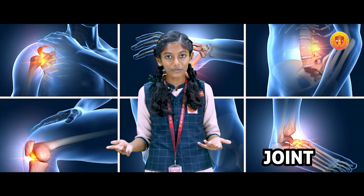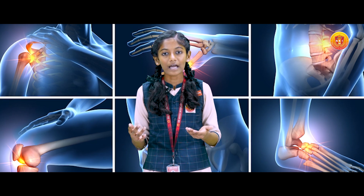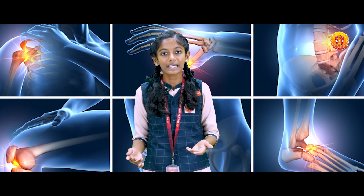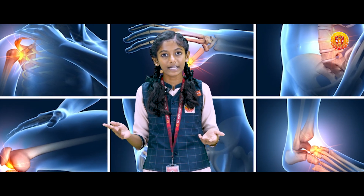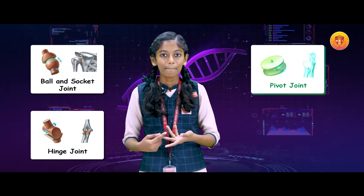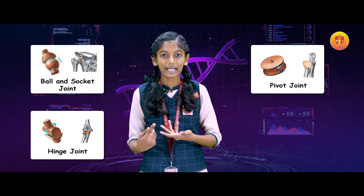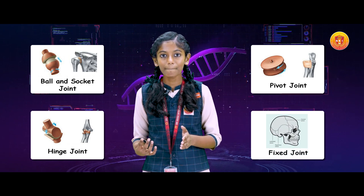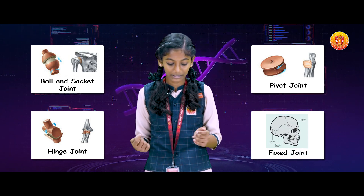A joint is a place where two or more bones meet together, allowing movement and flexibility in all directions. There are various types of joints in our body. The four main types of joints are ball and socket joint, hinge joint, pivotal joint, and fixed joint. Let us see them one by one.